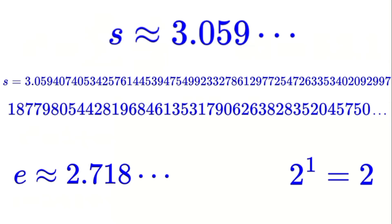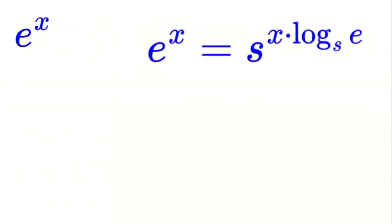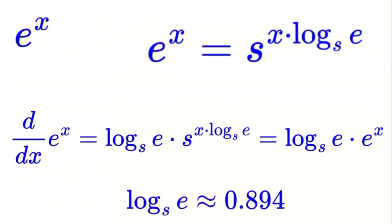Now let's see how the improved S-function relates to the standard exponential function, e to the power of X. We can express e to the power of X in terms of S to the power of X like this: e to the power of X equals S to the power of X times the logarithm of E with base S. To find the derivative of e to the power of X, we use the chain rule. The derivative is the logarithm of E with base S times S to the power of X times the logarithm of E with base S, which simplifies to the logarithm of E with base S times e to the power of X. This shows that the derivative of e to the power of X is proportional to e to the power of X, with the proportionality constant being the logarithm of E with base S. Numerically, this constant is about 0.894, so the improved S-function introduces a scaling factor, but still captures the exponential behavior of e to the power of X.